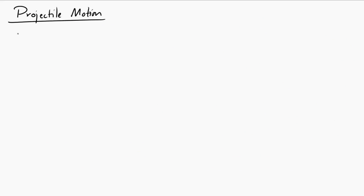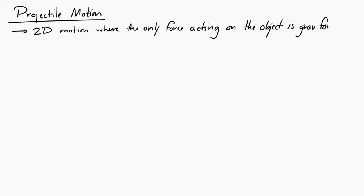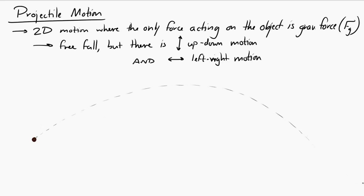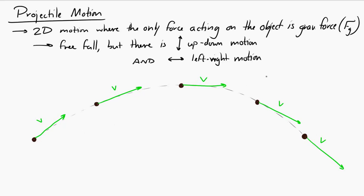Projectile motion is two-dimensional motion where the only force acting on the object is gravitational force — so it's freefall, but in two dimensions, both vertically and horizontally. The path of the object in projectile motion is a parabola. At every point in the motion, the only force acting is gravitational force, and the acceleration is 9.8 meters per second squared downward — the acceleration equals g.